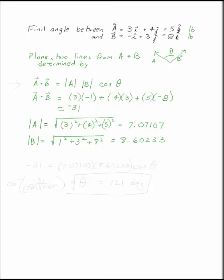Plug these two vectors and that dot product into our top equation. And what we have is minus thirty-one equals 7.07107 times 8.60233 times the cosine of theta, where theta is in that plane.